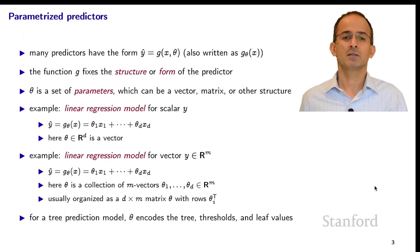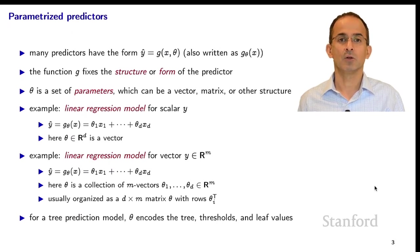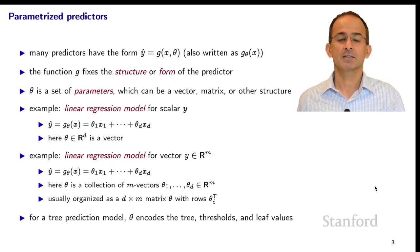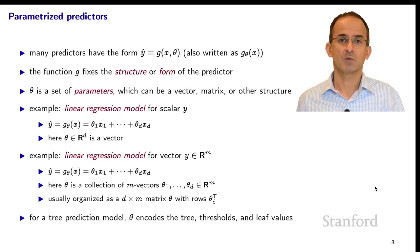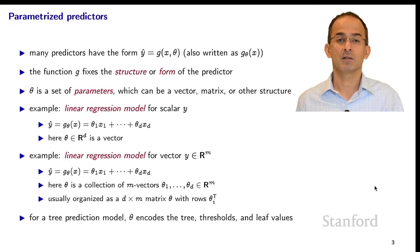We might also have a predictor for a vector y in R^m. If that's a linear regression model, then y-hat equals g_theta of x is also theta_1 times x_1 plus theta_2 times x_2, up to theta_d times x_d. But here each theta_i is an m-dimensional vector, and x_1 through x_d are coefficients determining a linear combination of the vectors theta_1 through theta_d. We often write that using a d-by-m matrix theta, where the i-th row is theta_i-transpose, and express the relationship as y-hat equals theta-transpose times x, just as before.